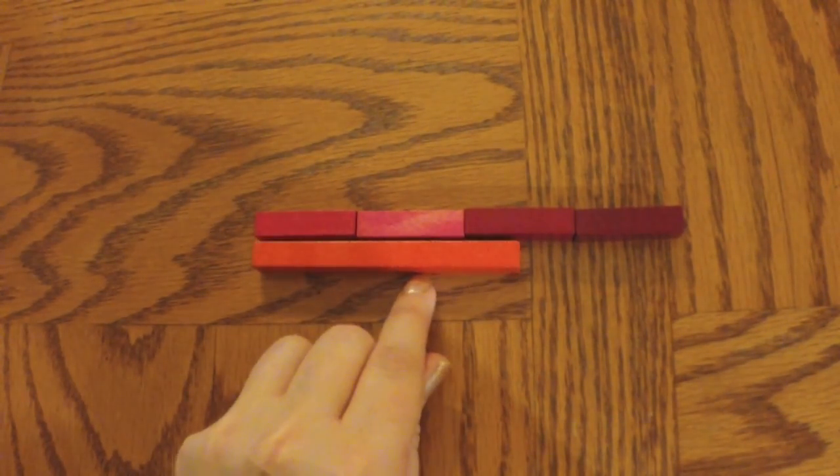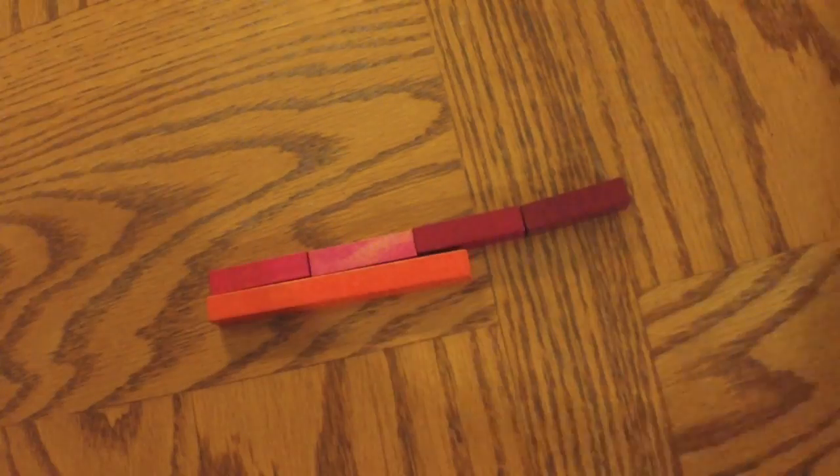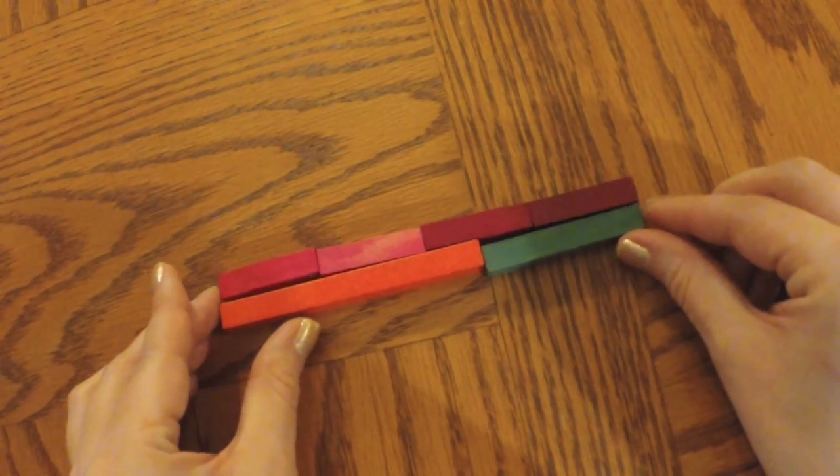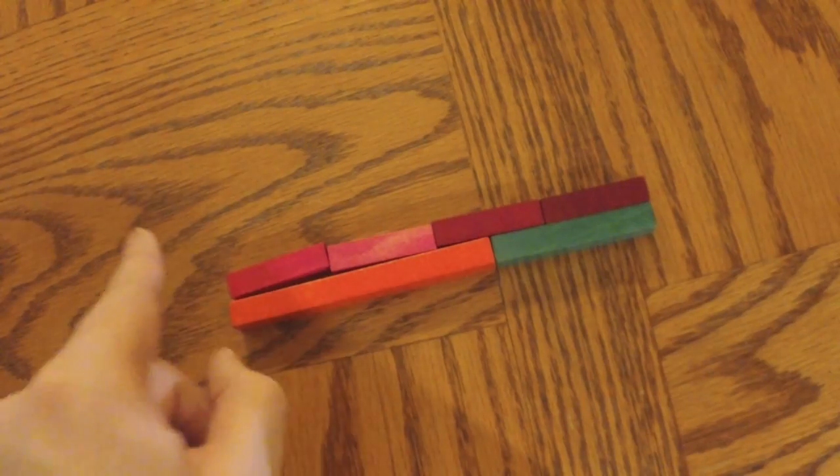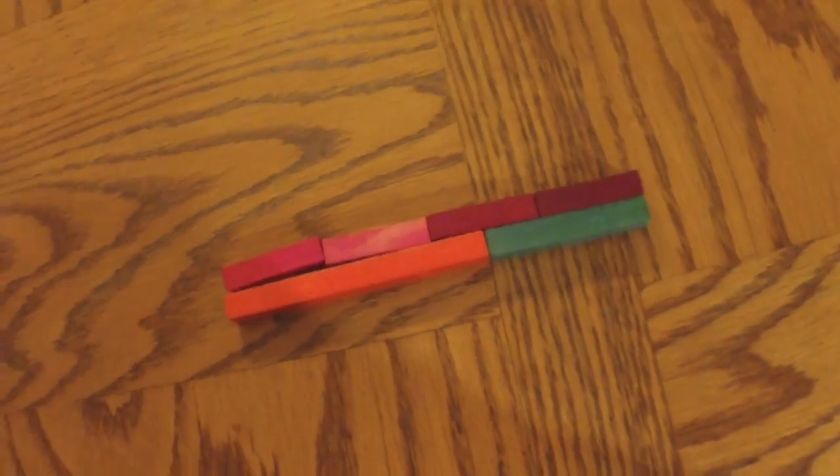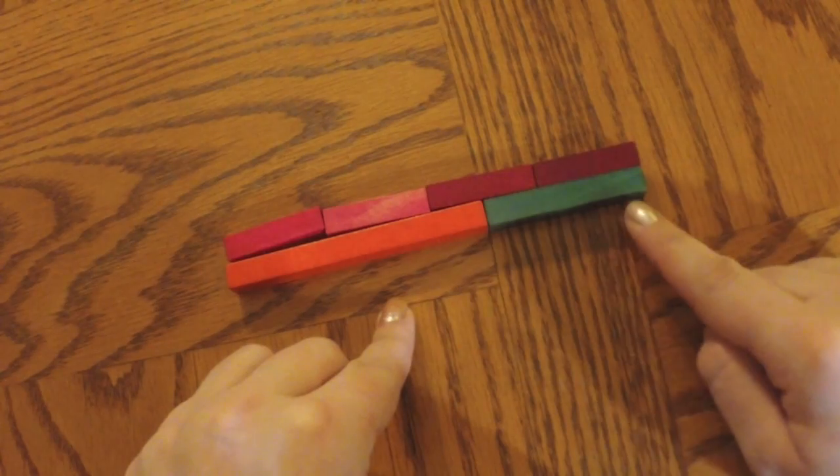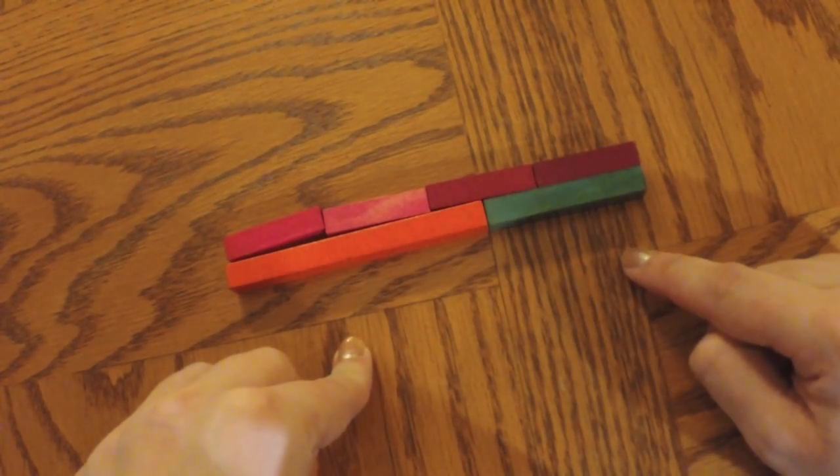And let's say we don't know what that equals. So we can take our largest Cuisenaire rod and line it up next to it. That's our ten. So we know that four times four is larger than ten. And then six matches up perfectly. So we know that four times four is equal to ten plus six, or sixteen. So four times four is sixteen.